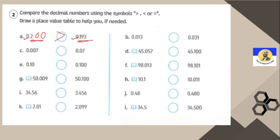Letter B: 0.013 and 0.31. Which one is the greatest? Here it's 13 and here it's 31, so 31 is the greatest — 0.31 is greater than 0.013.